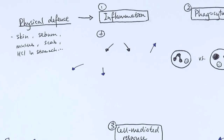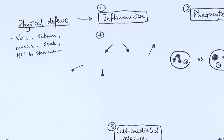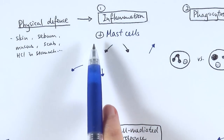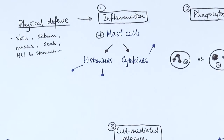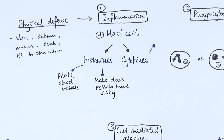However, if pathogens manage to get through these physical defences and into our bloodstream, the first thing that happens is inflammation. When the infection starts, mast cells are activated and they release two different chemicals: histamines and cytokines. There are two major effects of histamines, both of which affect the blood vessels — they dilate the blood vessels and make them more leaky, so the walls are more permeable.